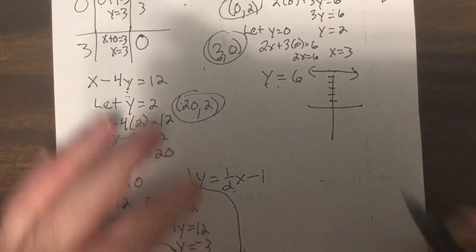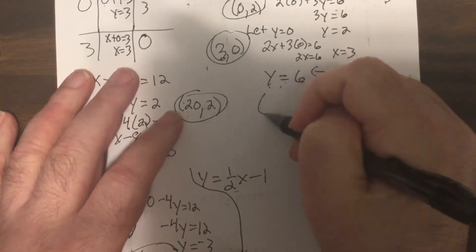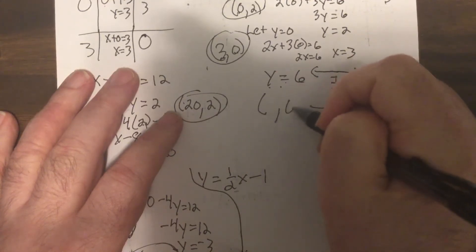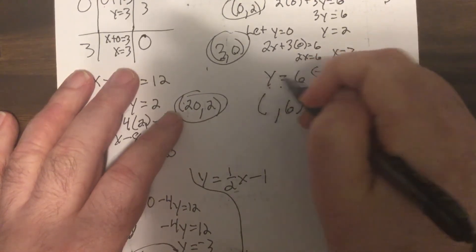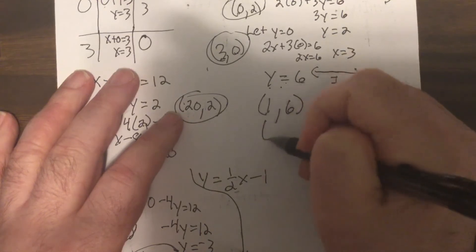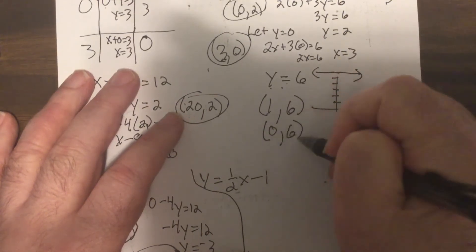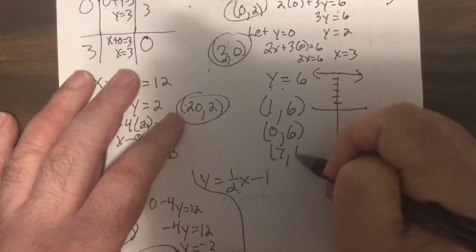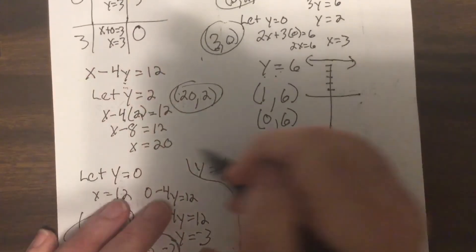If I asked you to graph it, I didn't for this problem, but that's what Y equals six is. Find ordered pairs. All that matters is Y is six. X can be anything. X is not part of the problem. So one, six, zero, six, seven, six. And if you remember the slope is zero.